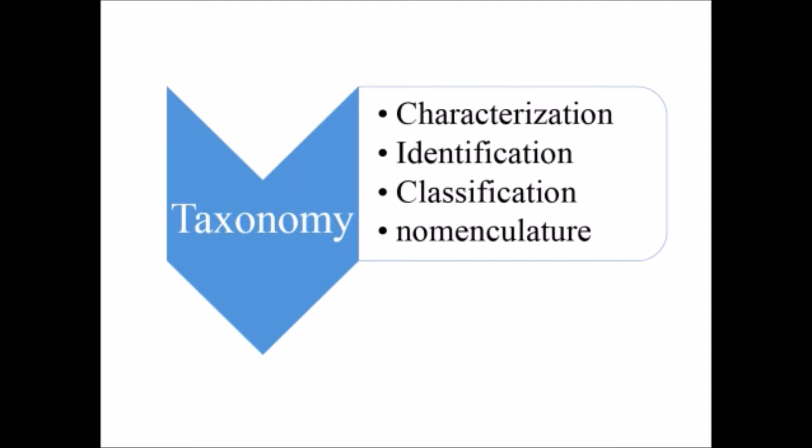In taxonomy, we will characterize the organism, then identify it, classify it into a definite class, and then for our convenience we give a common and certain name that is known as scientific name, or in the scientific term we call it nomenclature.